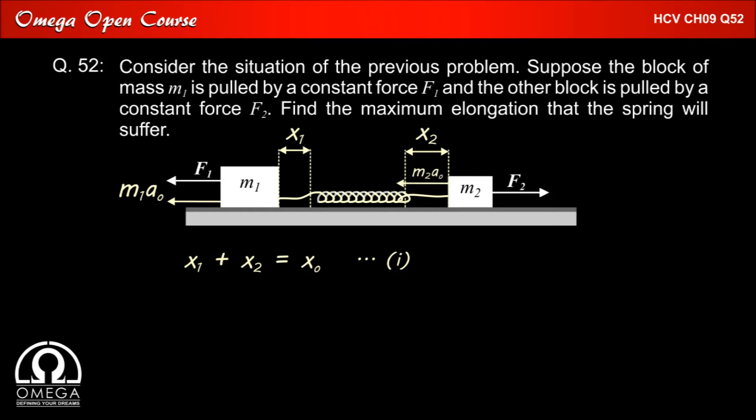Since we are looking at the system from the frame of center of mass, the center of mass of the system will remain at rest. As we have seen in the solution of question number 49, when two point masses move in a manner that center of mass of the system remains fixed, then the product of mass into displacement of both the objects is equal. So in this case M1 x1 must be equal to M2 x2 and this gives us our second equation.